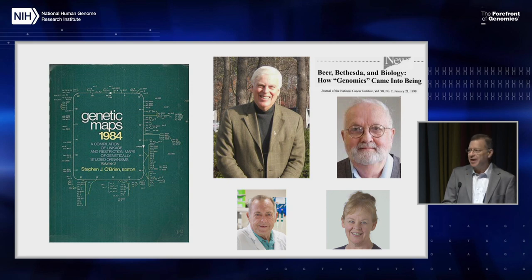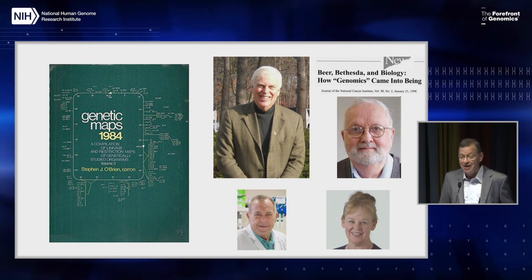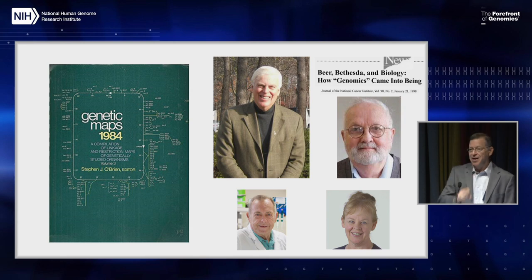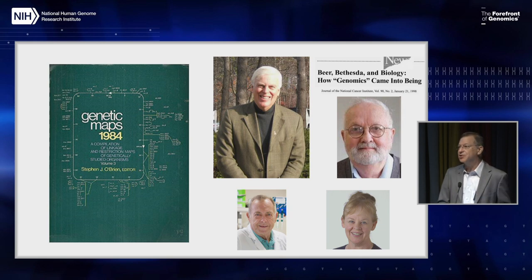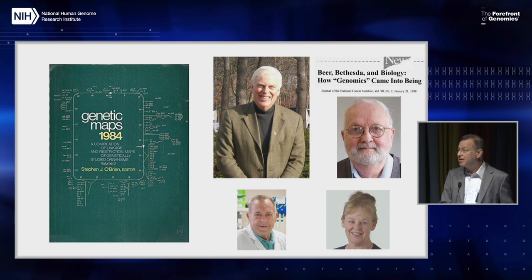I heard a talk by Jim Womack in 1985. Jim put up a slide showing a comparison of the organization of the cow, the human, and the mouse genomes. The markers in those days were biochemical and serological markers — there weren't really molecular markers. I became completely enthralled with this idea because I was working on the major histocompatibility complex. We had a very limited view of comparative genetics because we had very few loci that we could study in those days.